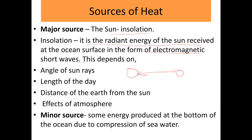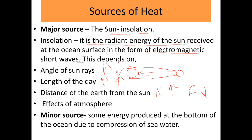If the rays fall vertically, energy received will be more. If the rays are slanting, the sunlight has to travel a longer distance so the energy received will be less. The length of the day also matters — if the day is longer, more energy is received. The distance of the earth from the sun also affects it: if it is nearer, more energy is received; if farther, less energy is received.